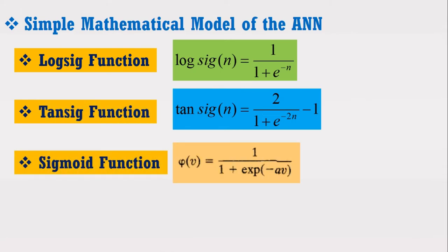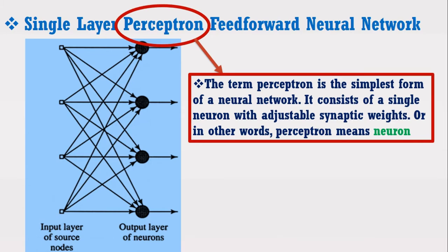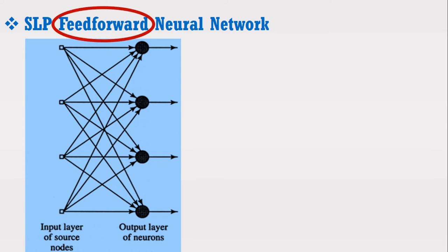Based upon these neurons, an artificial neural network may have the following basic type known as the single-layer perceptron feed-forward neural network. The term perceptron is the simplest form of a neural network — it consists of a single neuron with adjustable synaptic weights, or in other words, perceptron simply means neuron. In this network, one input layer of source nodes projects onto an output layer of neurons, which is why it is called single layer. The neurons always move in the forward direction with no feedback loops, which is why it is called feed-forward.